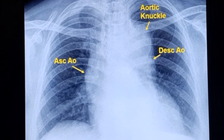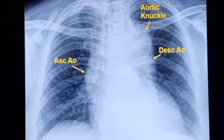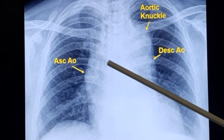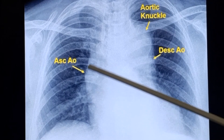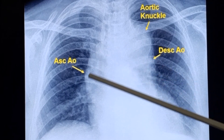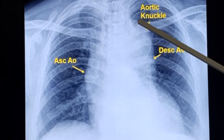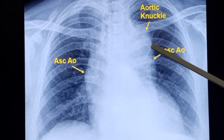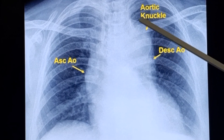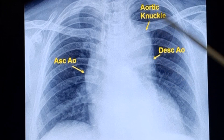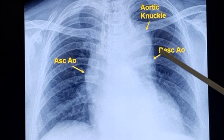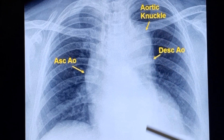This image has been labelled for convenience. The ascending aorta is labelled here, the aortic knuckle — also known as the aortic knob — and the descending aorta going down.